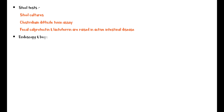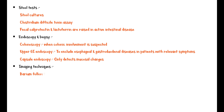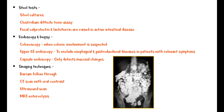Endoscopic examination and biopsy are essential in suspected cases of Crohn's disease. Colonoscopy is required when colonic involvement is suspected, and upper GI endoscopy is needed to exclude esophageal and gastroduodenal disease in patients with relevant symptoms. Capsule endoscopy is also useful, but only detects mucosal changes. Various imaging modalities are available including barium follow-through, CT scan with oral contrast, ultrasound scan, and MRI enteroclysis. A barium follow-through radiograph in Crohn's disease shows small yellow arrows on the left side denoting a stricture in the small intestine.